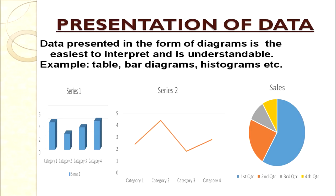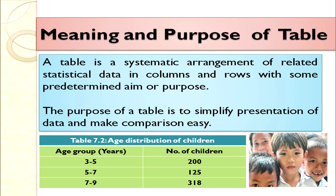In the previous chapter we discussed frequency arrays and frequency distribution. In this chapter we are going to learn how data can be presented in many ways. Data presented in the form of diagrams is easiest to interpret, attractive, and easy to understand. For example, when we construct tables, bar diagrams, histograms, or pie diagrams, we easily understand the information. First, let us discuss the meaning and purpose of a table. A table is a systematic arrangement of related statistical data in rows and columns with some predetermined aim or purpose.